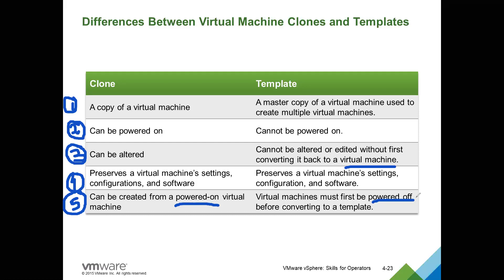So to summarize: you have to power off first, then convert to template. The main differences are: clone can be powered on, can be altered, and can be created when the virtual machine is in a powered-on state.